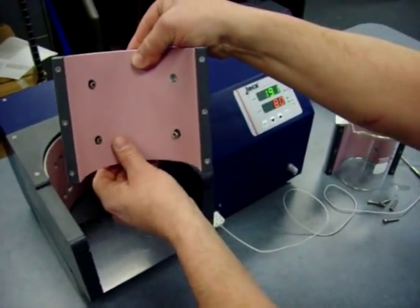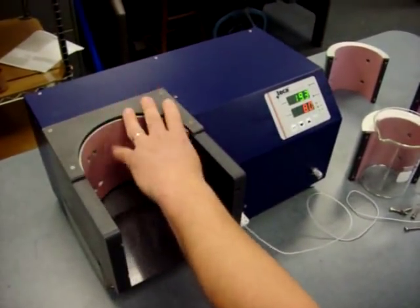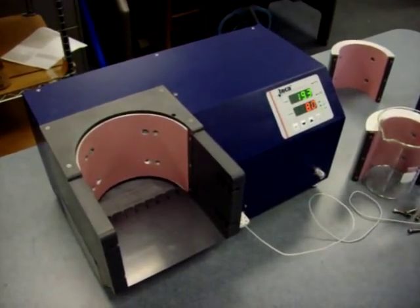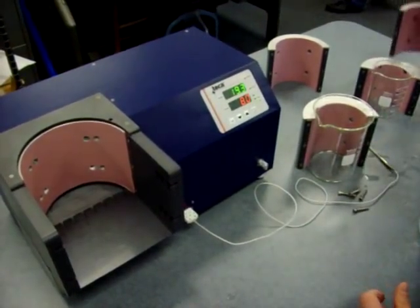Here comes what we call the sleeve - it pops right off and leaves behind what we call the shoe. This is the way the unit comes stock. The sleeves of various diameters for different size beakers are optional.